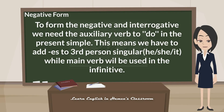To form the negative and interrogative, we need the auxiliary verb 'to do' in the present simple. This means we have to add 's' to the third person singular, while the main verb will be used in the infinitive.